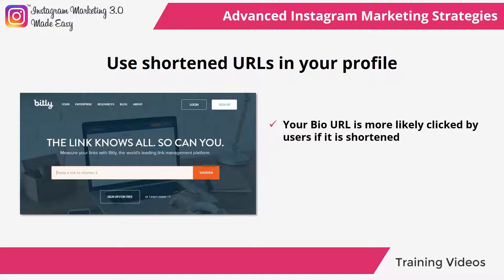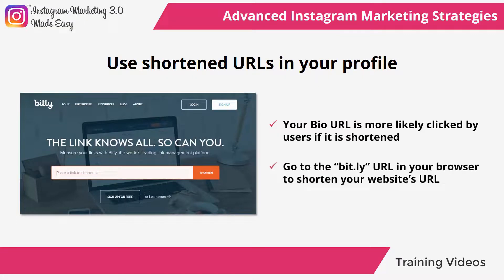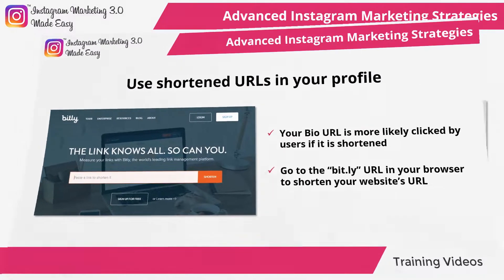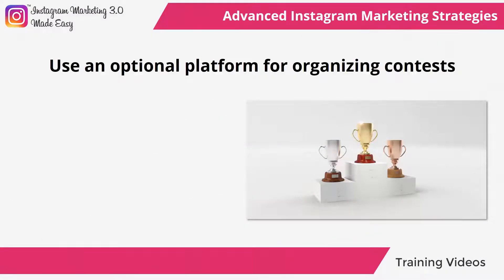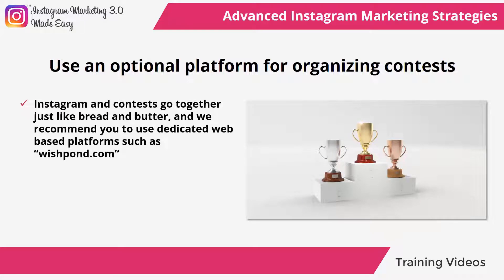Tip 3: Use shortened URLs in your profile. Your bio URL is more likely to be clicked by users if it is shortened. A great way to optimize your profile's URL is by shortening it with a link shortening service. We recommend using Bitly, which is free and works great. You can always go back to your site's Bitly page to track the number of visits your site is getting through Instagram, using it as both a backlink and a tracking tool.